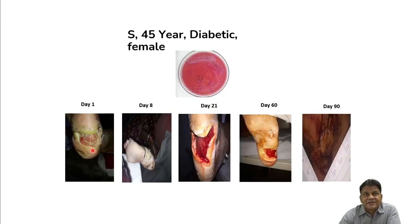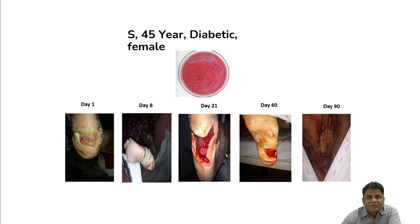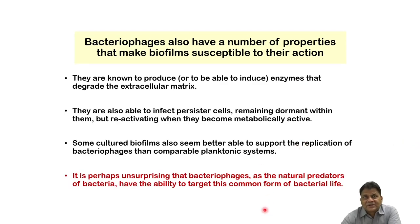A 45-year-old diabetic female had a very deep wound with infected slough and yellow necrotic material. After starting phage therapy, by day 60 the plantar wound showed healthy bright-red granulation tissue with no sloughing or debris, and by day 90 there was complete healing. Another diabetic male also achieved complete healing by 90 days.